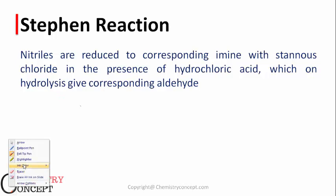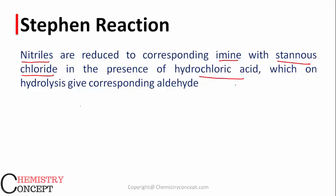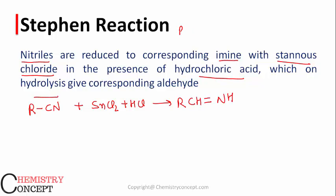Another name reaction is the Stephen Reaction. In this reaction, nitriles (also known as cyanides) are reduced to corresponding imines with the help of stannous chloride (SnCl2) in the presence of hydrochloric acid. Starting with RCN and using SnCl2/HCl, we get an imine RCH=NH. This is a reduction because in the cyanide, carbon is triple-bonded to nitrogen, and hydrogen is added to both carbon and nitrogen.